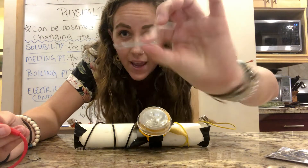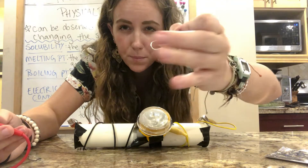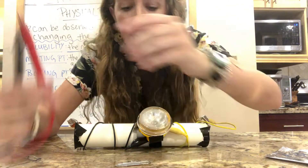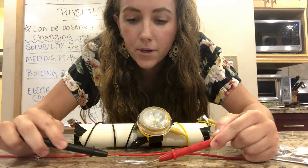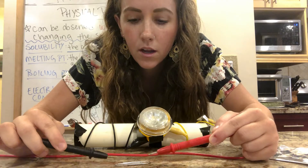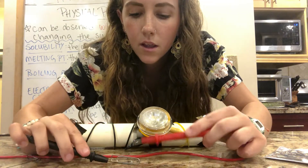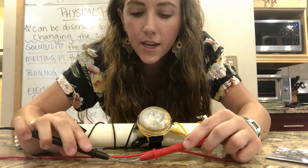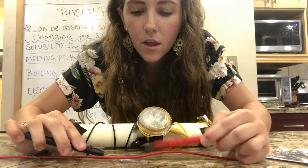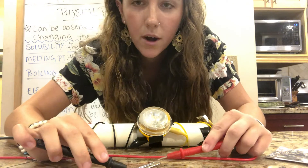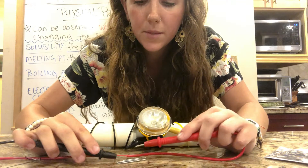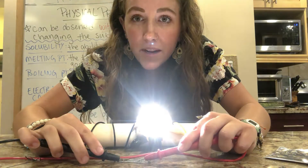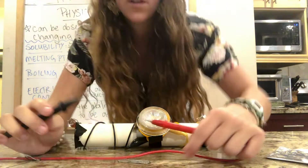Now I have a paper clip — a standard paper clip without any rubber coating. Testing my paper clip and completing the circuit, it seems pretty good. I can get it to light up at certain parts of the paper clip. Our paper clip seems to be a pretty fair conductor of electricity.